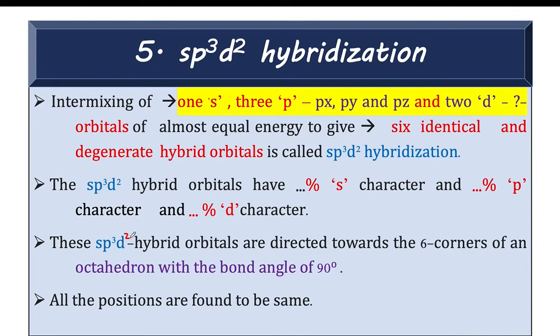So these sp³d² hybrid orbitals will be oriented in a regular octahedral geometry or we say these are directed towards 6 corners of an octahedron with the bond angle of 90°.